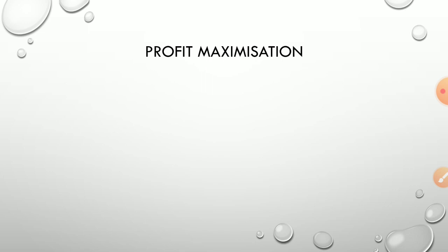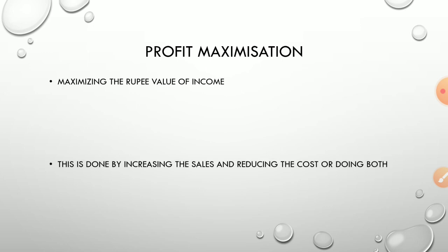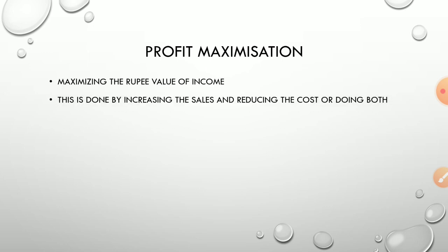The first objective is profit maximization. Profit maximization means maximizing the rupee value of income during an accounting period. This is done by increasing sales, reducing the cost of production, or by doing both — we can increase the profit of the organization. Why should a company have profits?